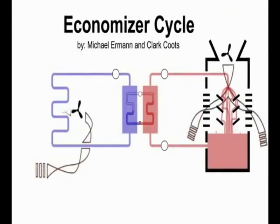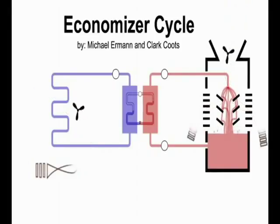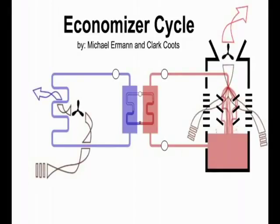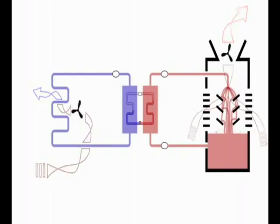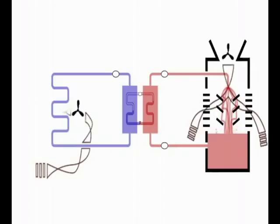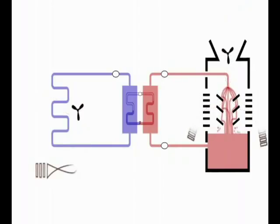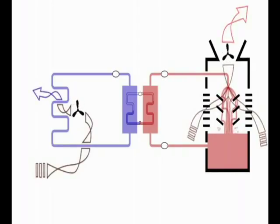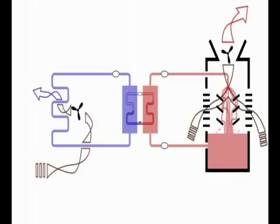Economizer cycle. Buildings, especially in the interior of large structures, often require mechanical cooling, even on very cold nights. This is because the heat generated inside the building by people, lighting, and equipment will offset some of the heat losses through the building envelope.